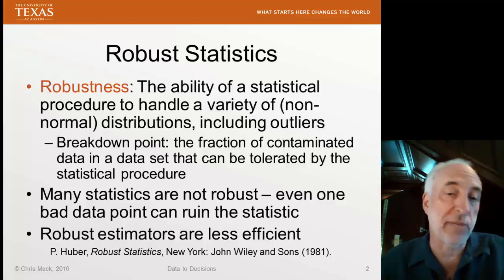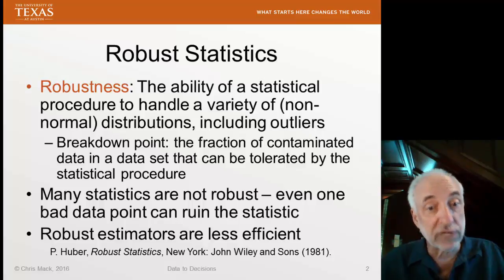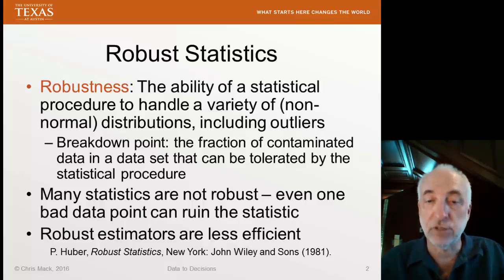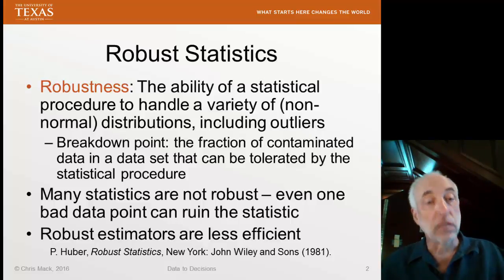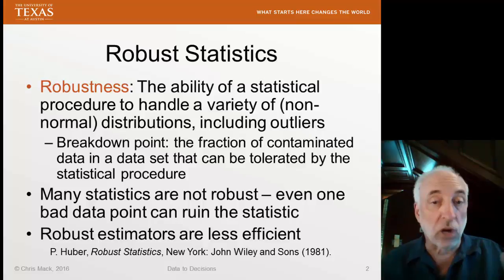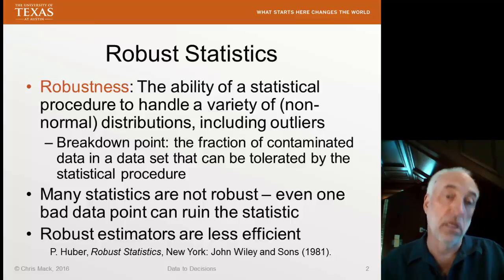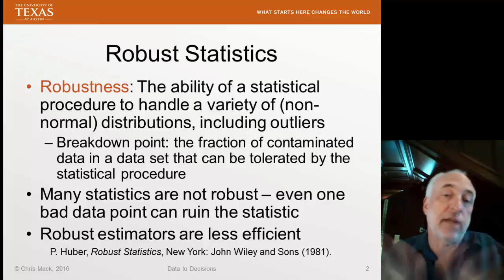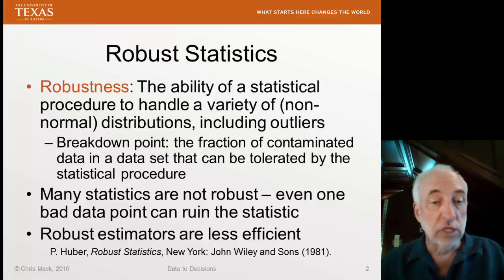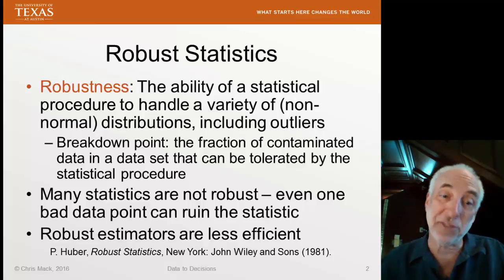We like robust estimators that have higher breakdown points. But there is a problem with robust estimators: they're less efficient. Recall that efficiency, when it comes to estimators, refers to how big the error bars are — the confidence intervals around the statistic, or the standard error of that estimate. If the standard error is larger, the estimator is less efficient; if smaller, it's more efficient. We like efficient estimators and we like robust estimators, and there's a trade-off between the two.